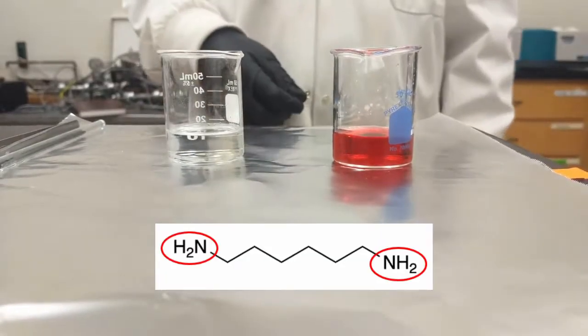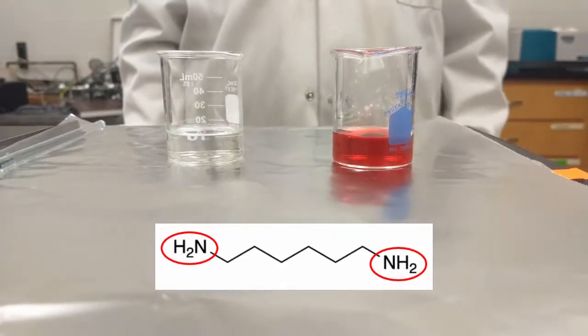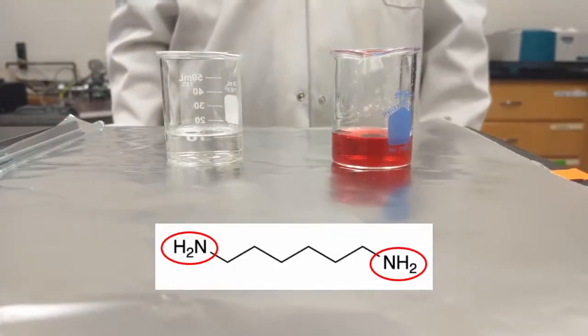A diamine means that it has an amine functional group on either side. An amine is made up of nitrogens and hydrogens as you can see here.